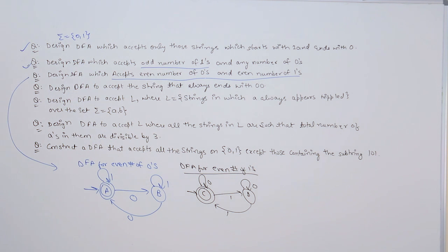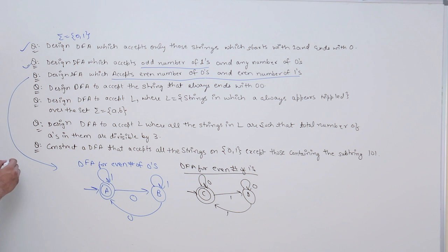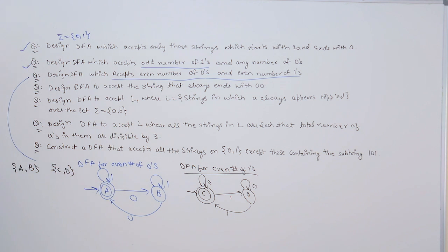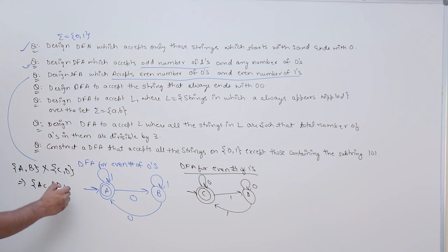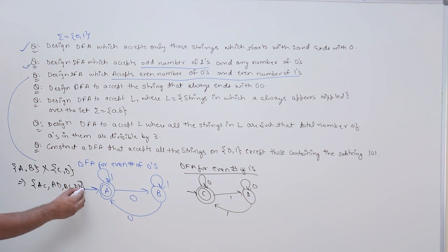For the DFA for even number of ones: state C is the initial and final state. We are not counting zeros, only ones. If we get a one, we transition to state D because number of ones are odd. One more one makes number of ones even again, going back to C. So we have DFA with states A and B for even zeros, and states C and D for even ones. Taking the cross product of these states gives us: AC, AD, BC, and BD — four states.